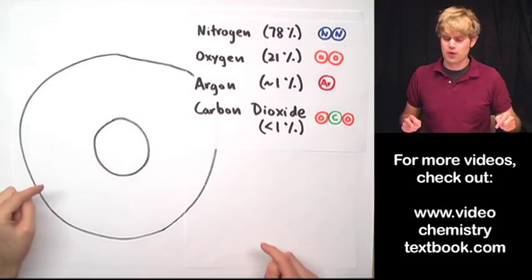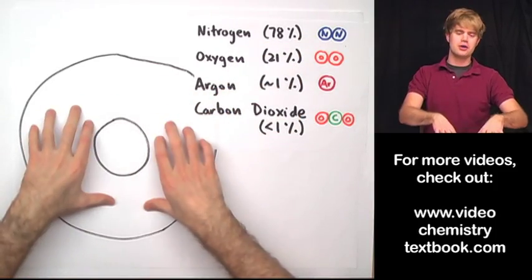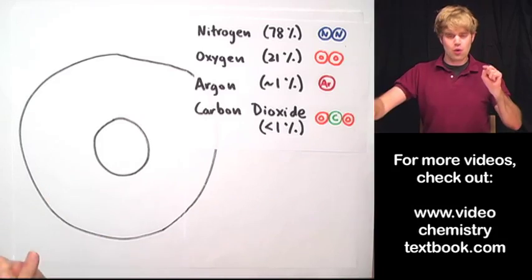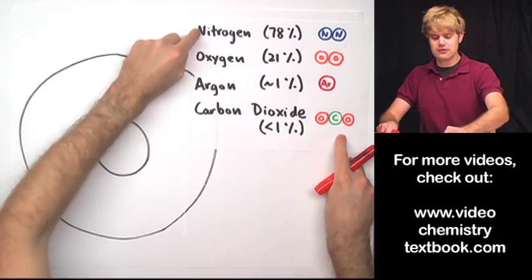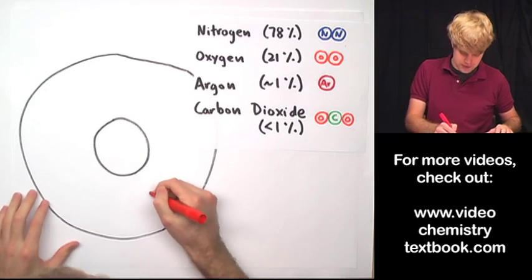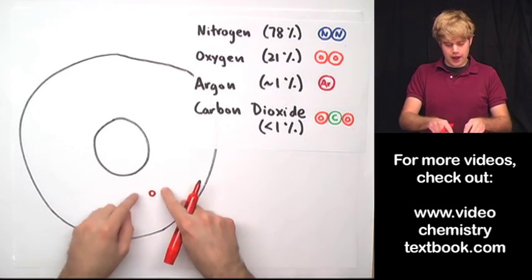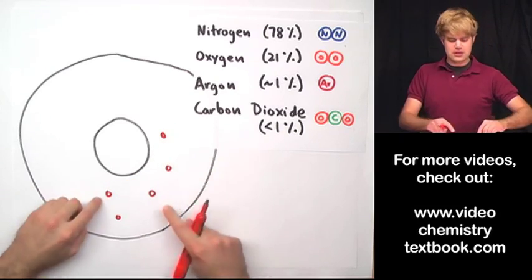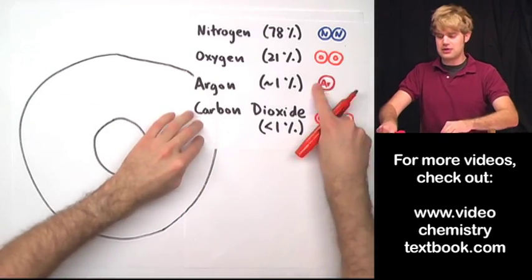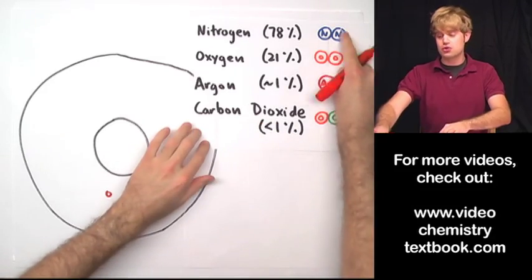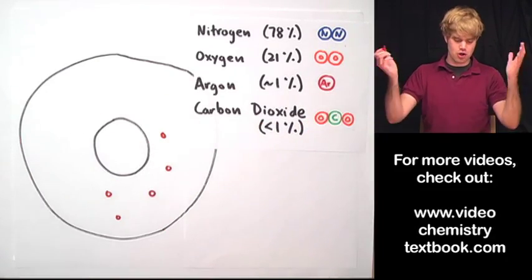But you know what? I'm lazy, right? I don't want to draw all of these different molecules inside the tire because it's just a pain. So what I'm going to do is I'm going to abbreviate all of these different types of both atoms and molecules by just drawing these little red round circles. And these red round circles stand for maybe either single atoms or things like carbon dioxide, which are actually three atoms or two atoms, nitrogen, two atoms, oxygen, whatever.